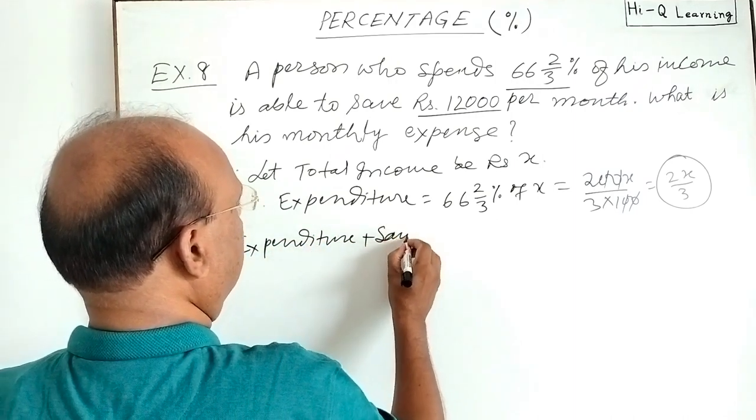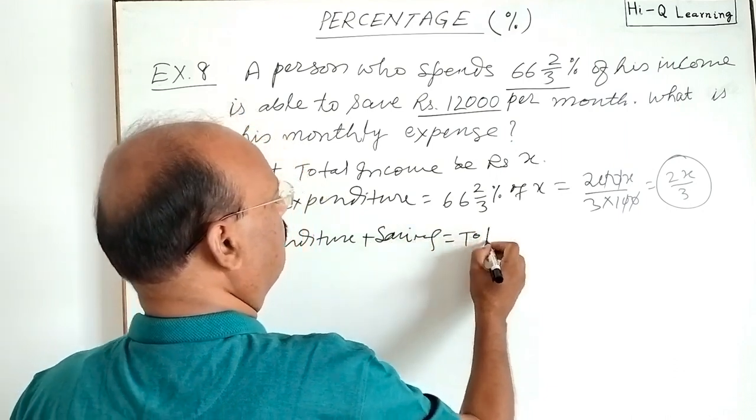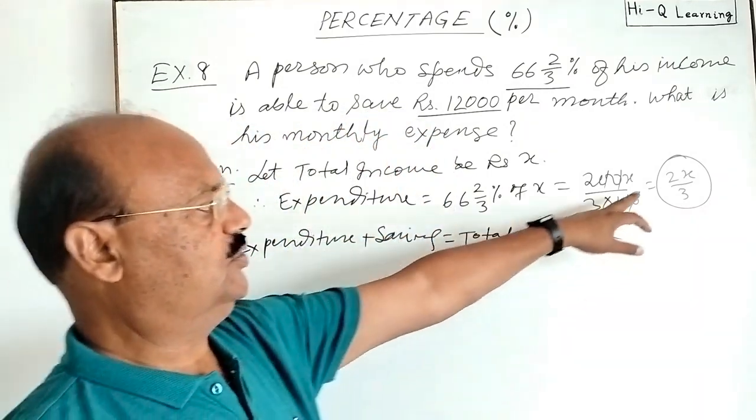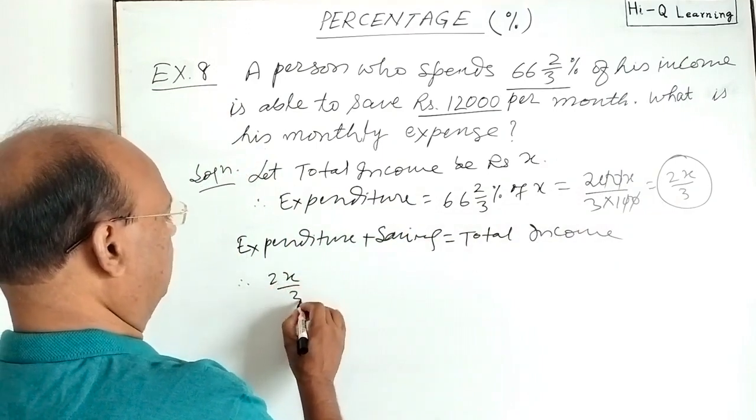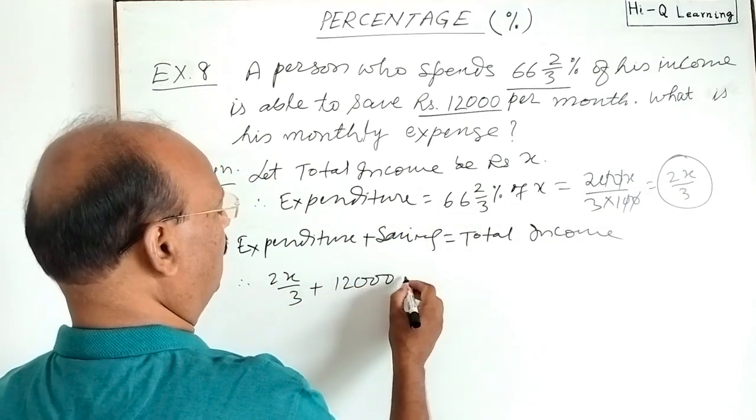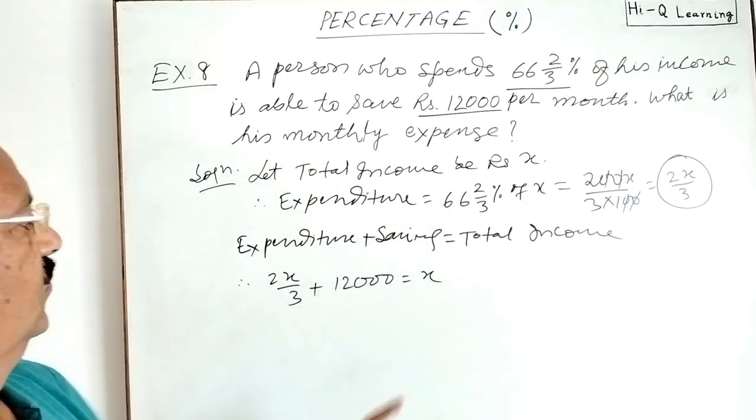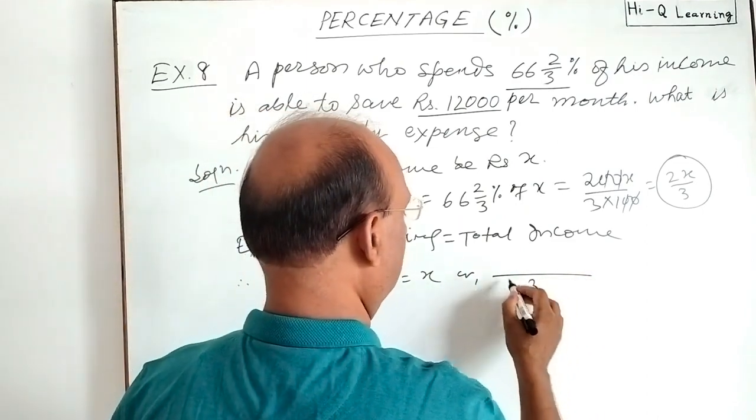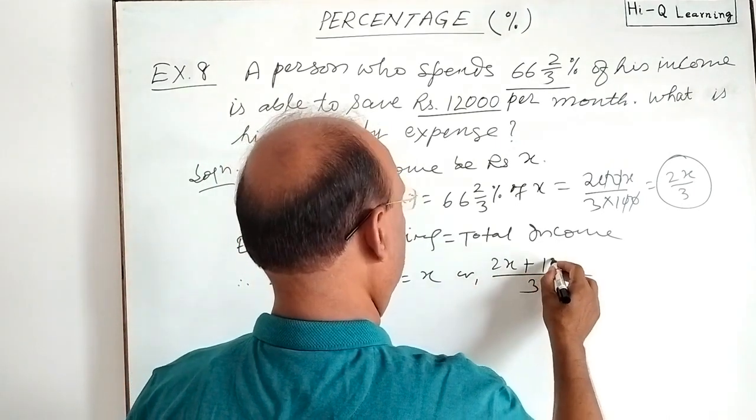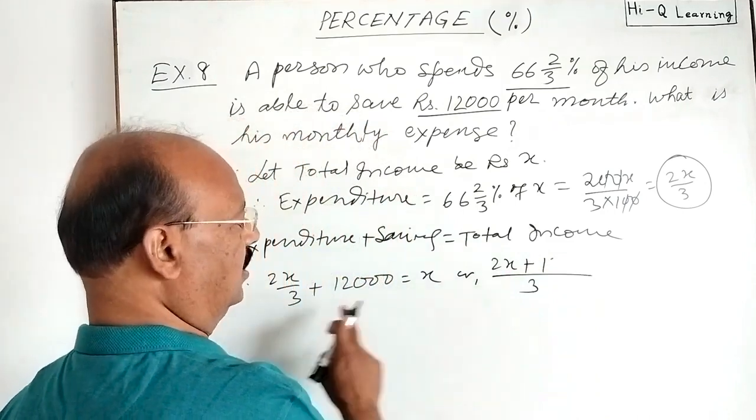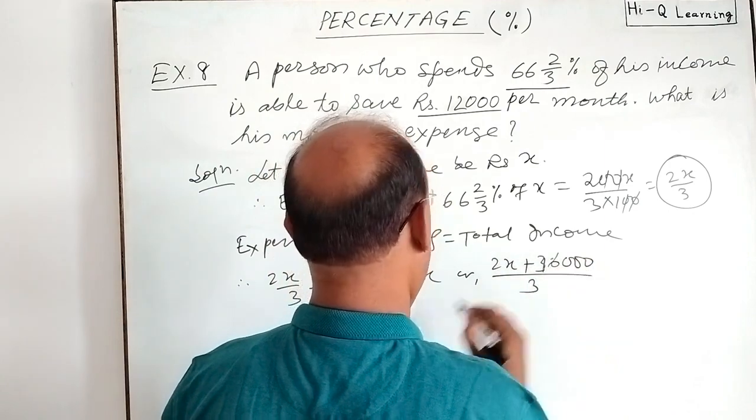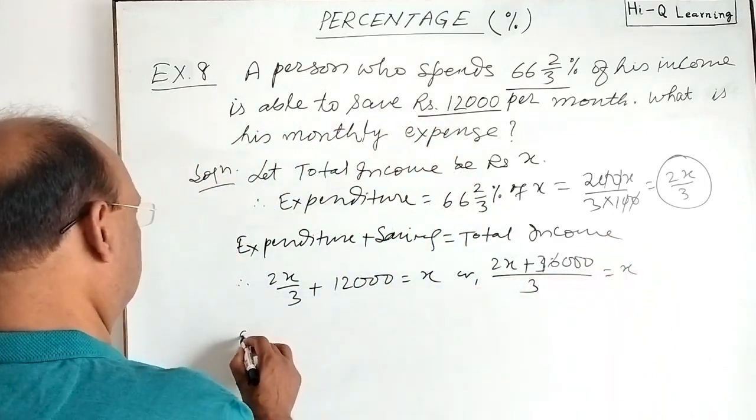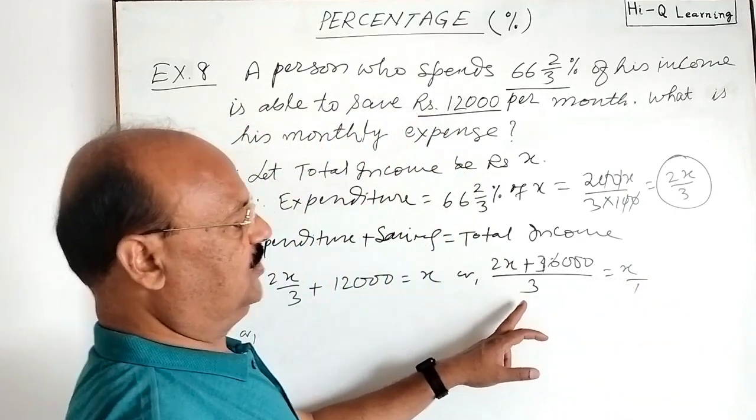As we know, expenditure plus saving is equal to total income. We have calculated expenditure is 2X by 3, so therefore 2X by 3 plus saving is 12,000, which is equal to X total income. Let us simplify it. Here LCM of denominators is 3, so 2X plus 12,000 into 3, so it will be 36,000, is equal to X.